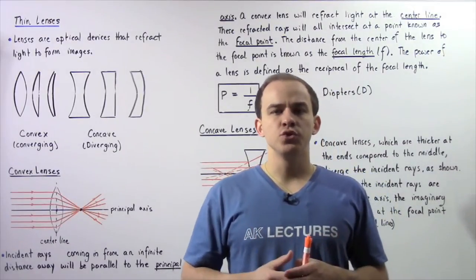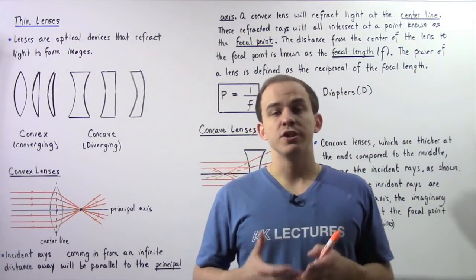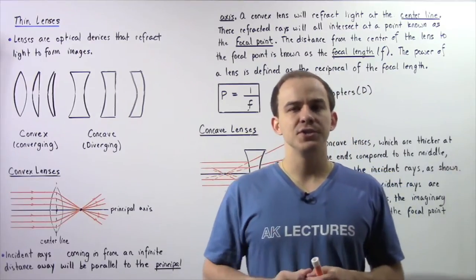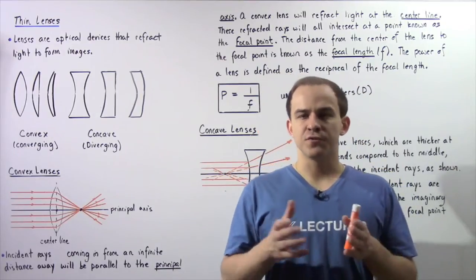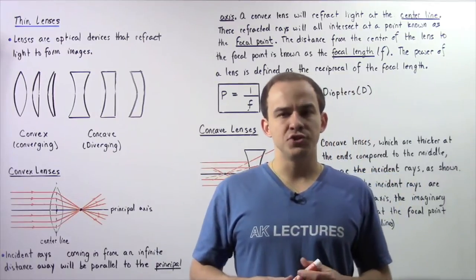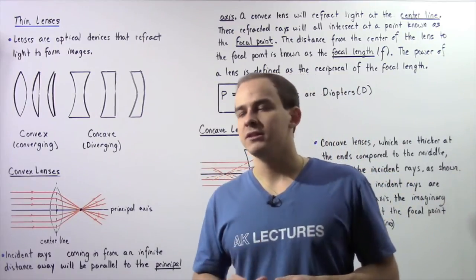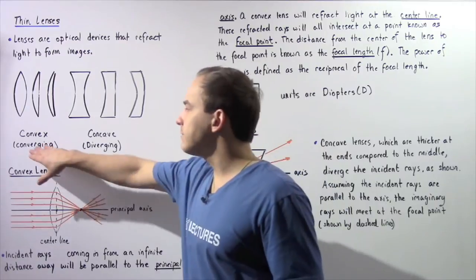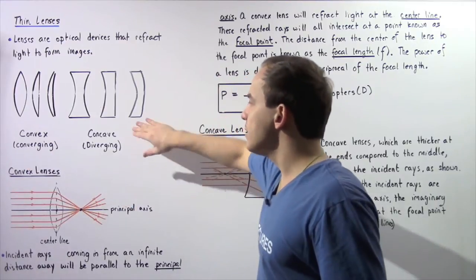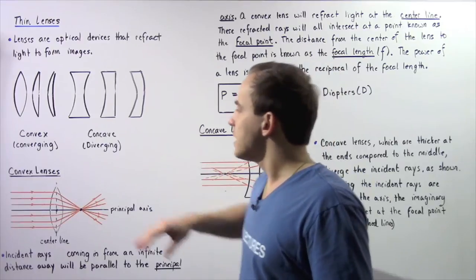In this lecture, we're going to introduce thin lenses. A thin lens is essentially an optical device that is capable of refracting or bending light to form images. Two types of thin lenses exist: the convex or converging lens and the concave or diverging lens.